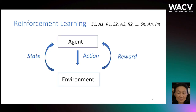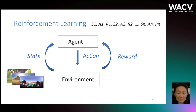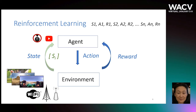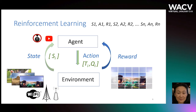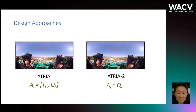Choosing what and when to download is a sequential decision-making process which can be modeled using reinforcement learning. The environment is the video network. The agent runs on a player and observes states, and the action is to select a tile and tile quality to download. Based on the playback, the reward is the user quality of experience.